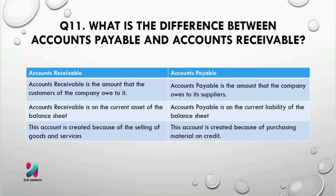What is the difference between accounts payable and accounts receivable? Accounts receivable is the amount that customers of the company owe to it, while accounts payable is the amount that the company owes to its suppliers. Accounts receivable is on the current asset side of the balance sheet, whereas accounts payable is on the current liability side. Accounts receivable is created because of the selling of goods and services, while accounts payable is created because of purchasing material on credit.